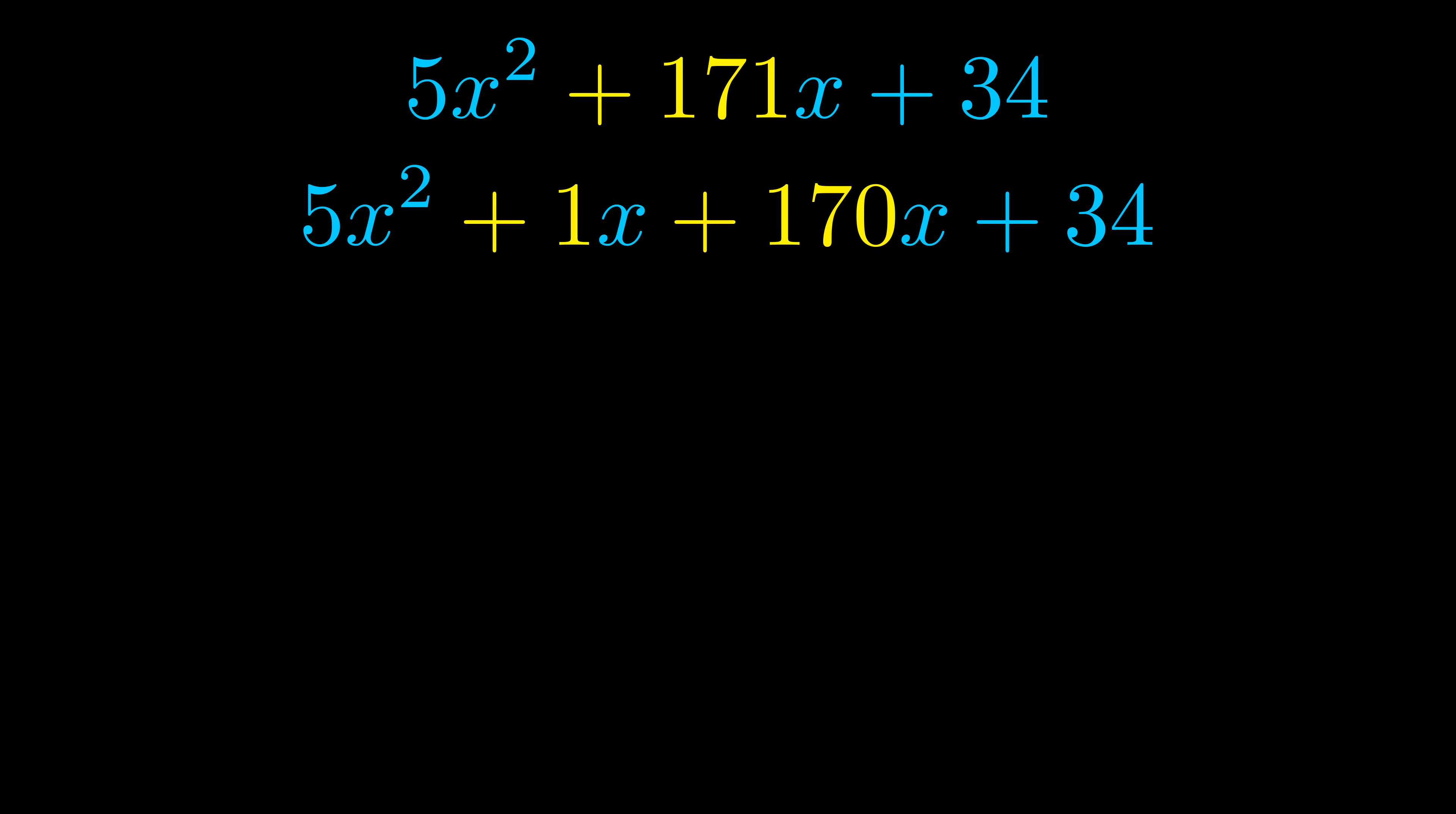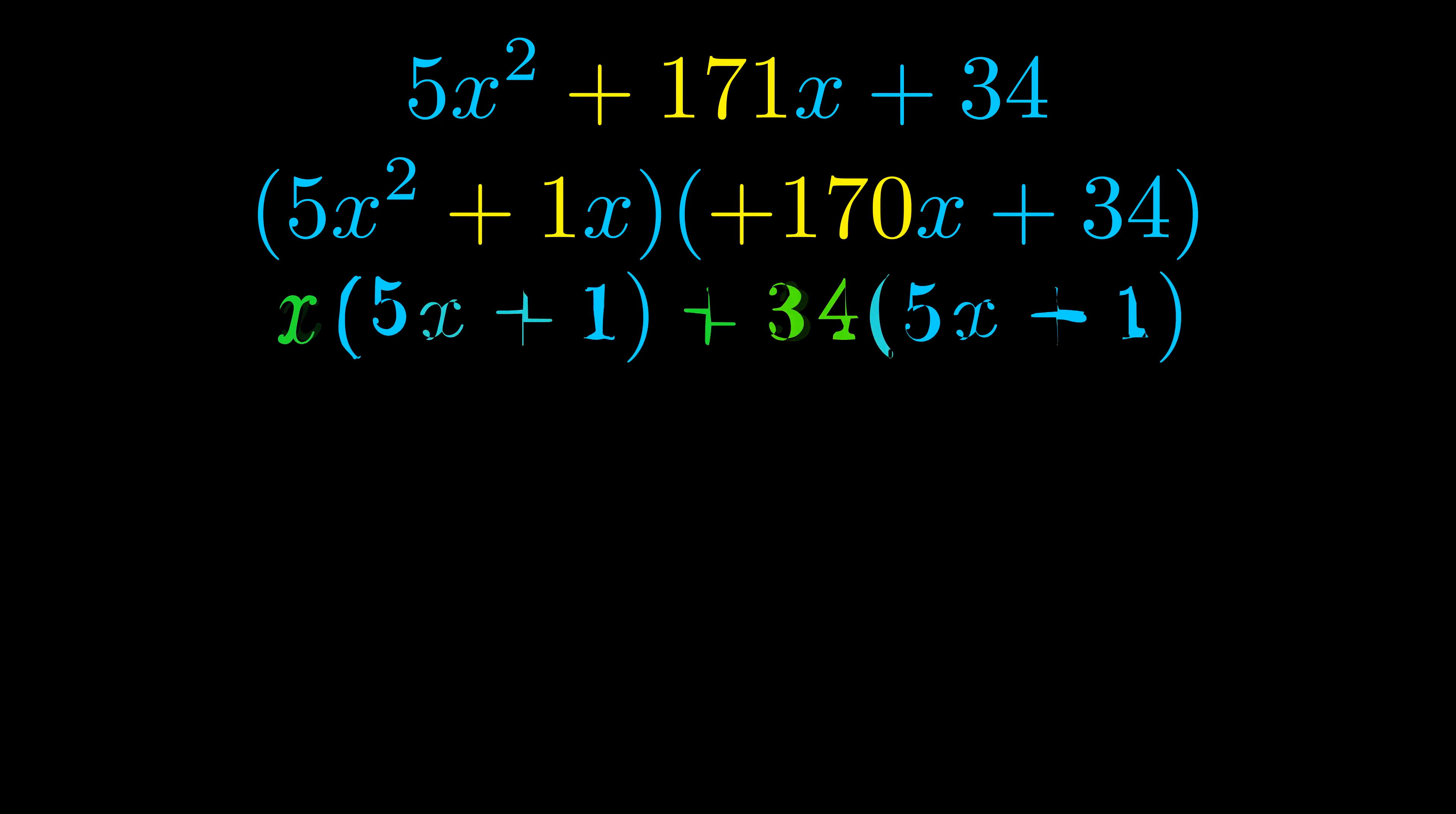Once we've done this we go ahead and we put parentheses around the first term and the last term and we do that so that we can take the greatest common factor out of both terms. We can see the greatest common factor is now outside in green.